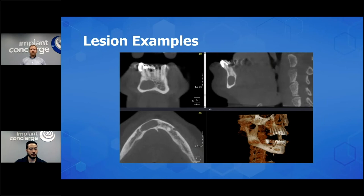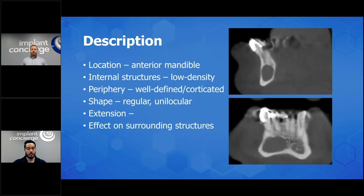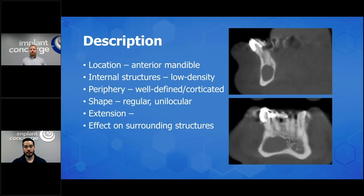There's low density. There's not a lot of expansion — I really think it's the thinning of the cortical outlines that's giving that appearance. So how close were you to my findings? The location: anterior mandible. Internal structure: low density. Periphery: very well-defined and corticated. So this one's not looking so scary — I didn't see any interruption of the cortical outlines. The shape: unilocular, regular.